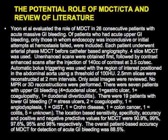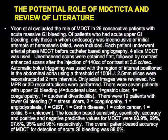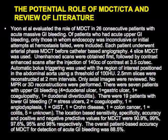Jan looked at the role of CT in 26 consecutive patients with acute massive GI bleeding. Only those with acute upper GI bleeding in whom endoscopy was inconclusive were included. Patients underwent arterial phase CT before angiography — an older study using four-slice scanners, contrast injected at 3.5 mL/s, with only axial images reviewed. Location-based sensitivity, specificity, accuracy, and positive and negative predictive values for CT were 91%, 99%, 97%, and 95%...